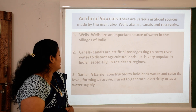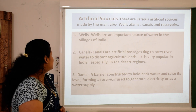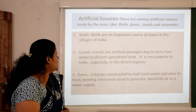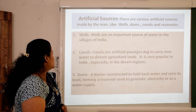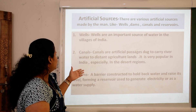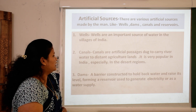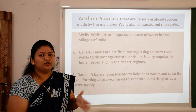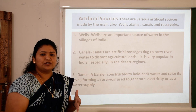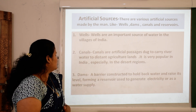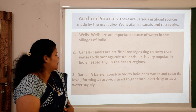Second, canals. Canals are artificial passages dug to carry river water to distant agricultural lands. It is very popular in India, especially in the desert region. Canal means nahar — nahar ke through water ko supply karte hain crops ke liye, kheti ke liye. Especially Rajasthan mein.